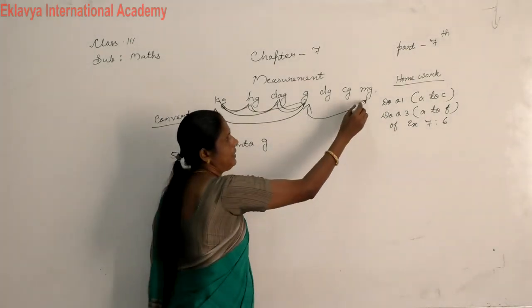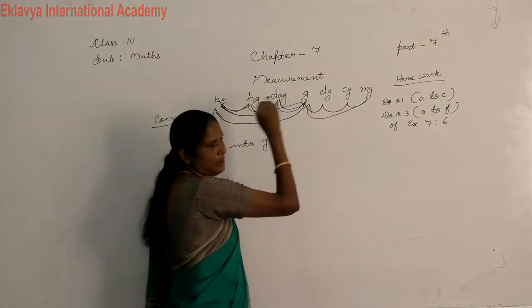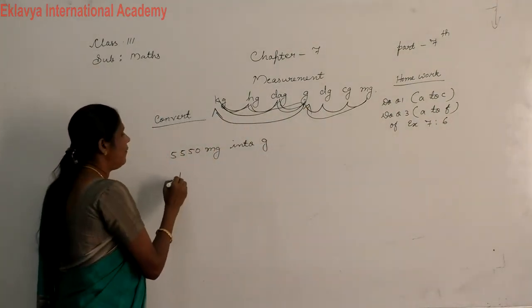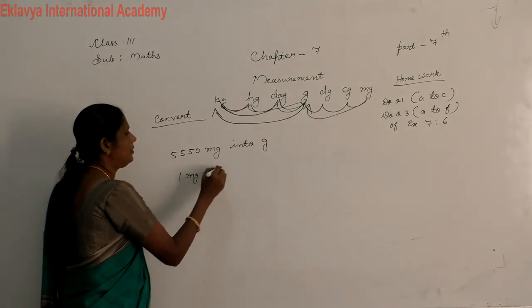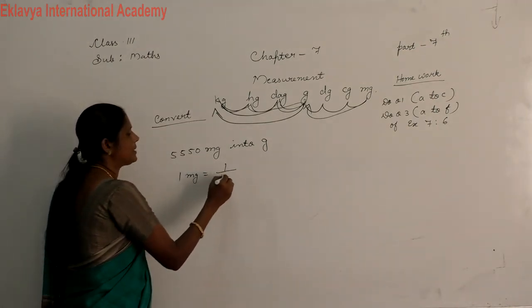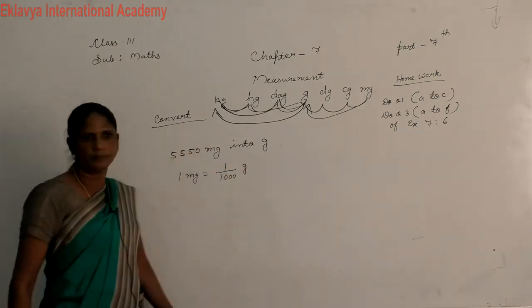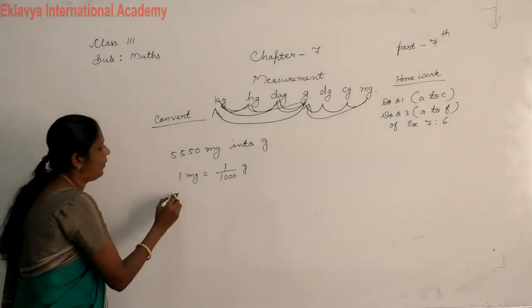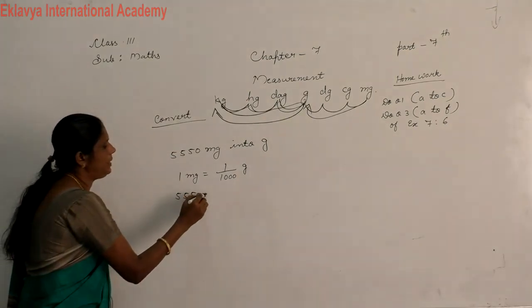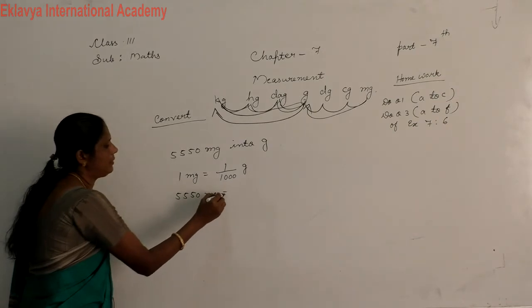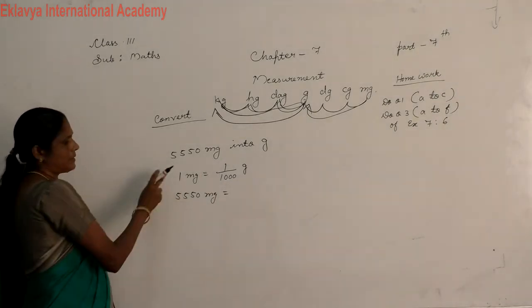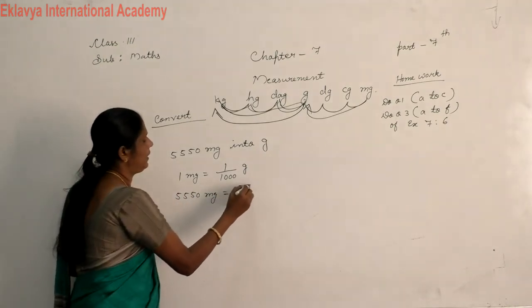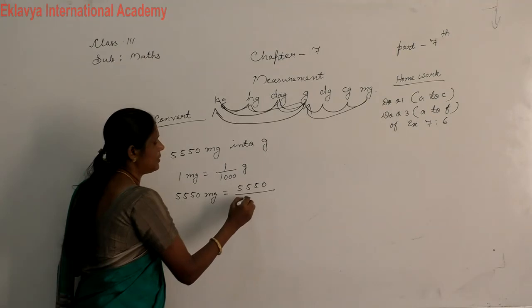We divide by 1000. How many steps? Listen here. 10, 100, 1000. We divide by 1000. That is 1 mg is equal to 1 by 1000 gram. Now, how many mg we have? 5,550 mg is equal to 5,550 upon 1000.